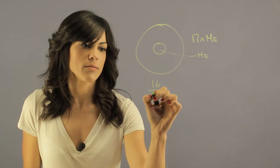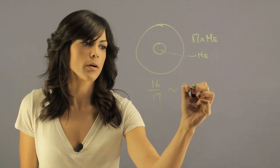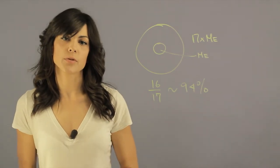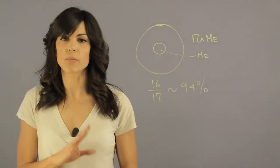So 16 over 17 gives you the percentage, which is about 94%, which means about 94% of Neptune is actually made out of some form of gas.